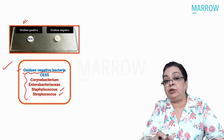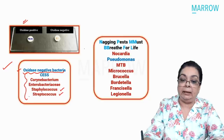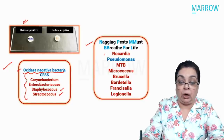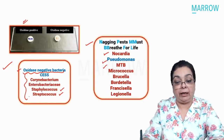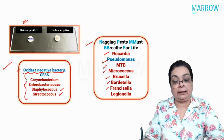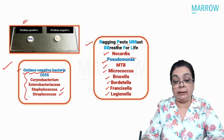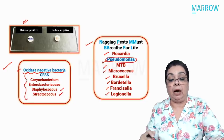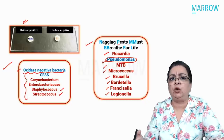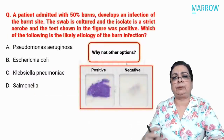For strict aerobes, use the mnemonic 'Nagging Pests Must Breathe For Life': Nocardia, Pseudomonas, Mycobacterium tuberculosis, Micrococcus, Brucella and Bordetella, Francisella and Legionella. So Pseudomonas is a strict aerobe. The burn infection makes you think of Staphylococcus aureus or Pseudomonas aeruginosa immediately. All other options — Escherichia coli, Klebsiella pneumoniae, Salmonella — are members of Enterobacteriaceae, which are all oxidase negative and facultative anaerobes, eliminating them by both criteria.